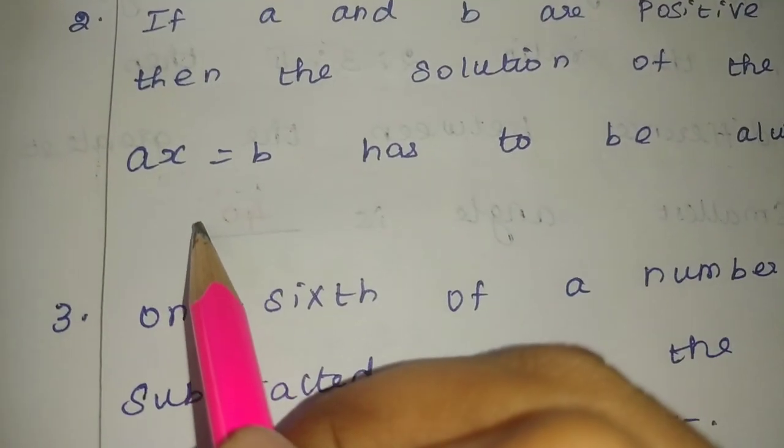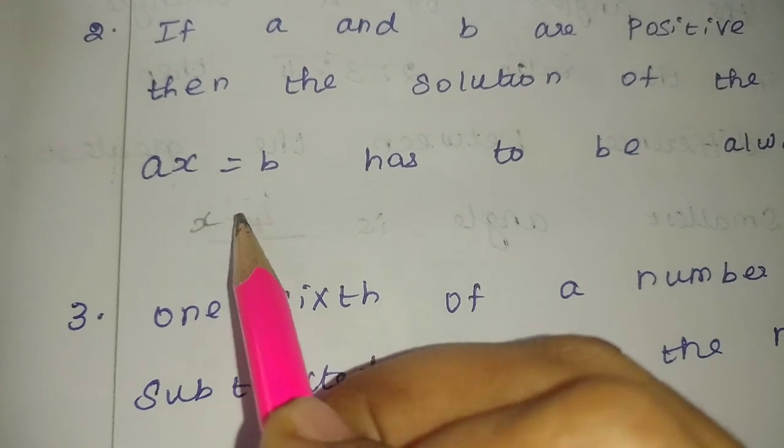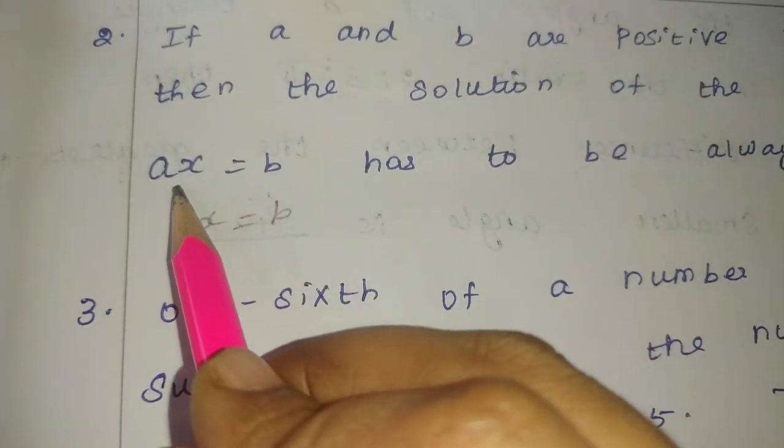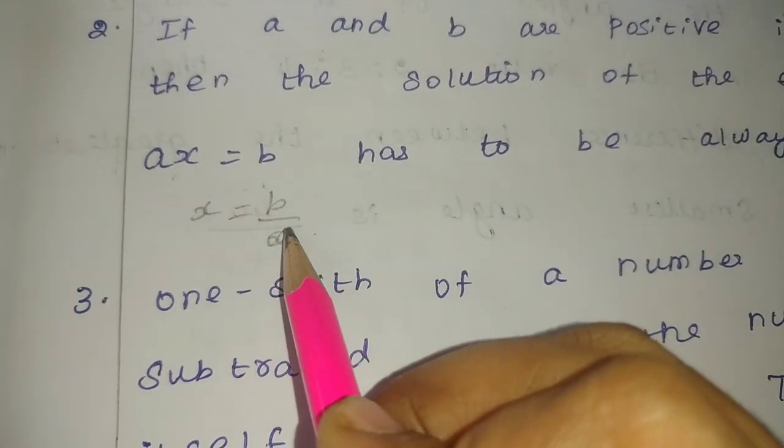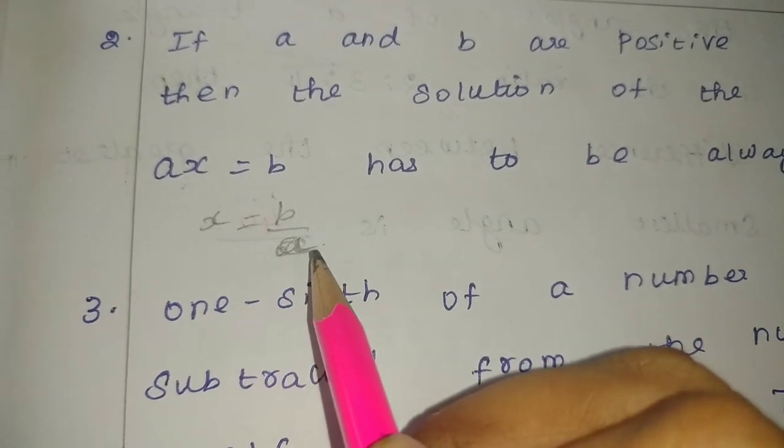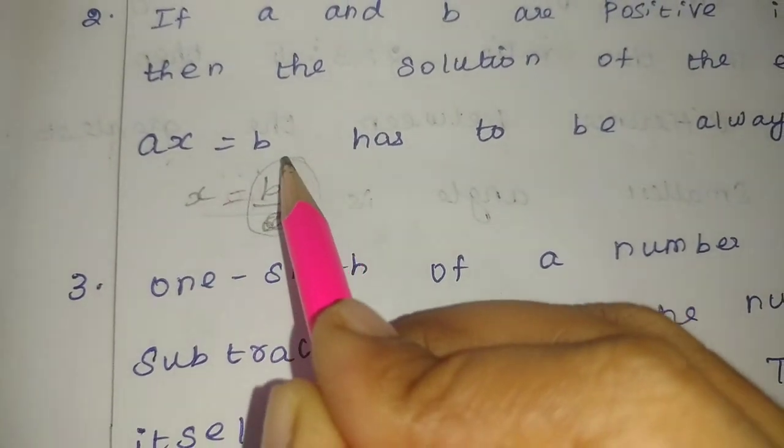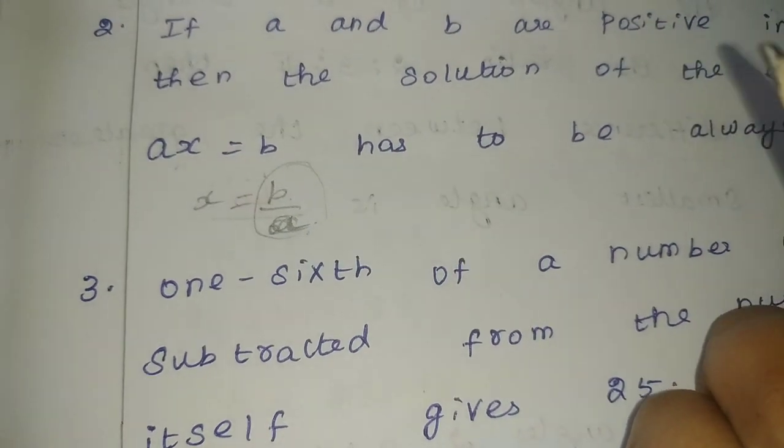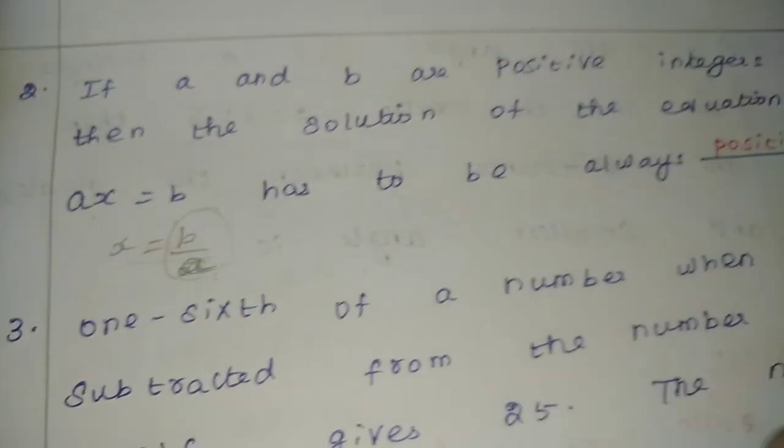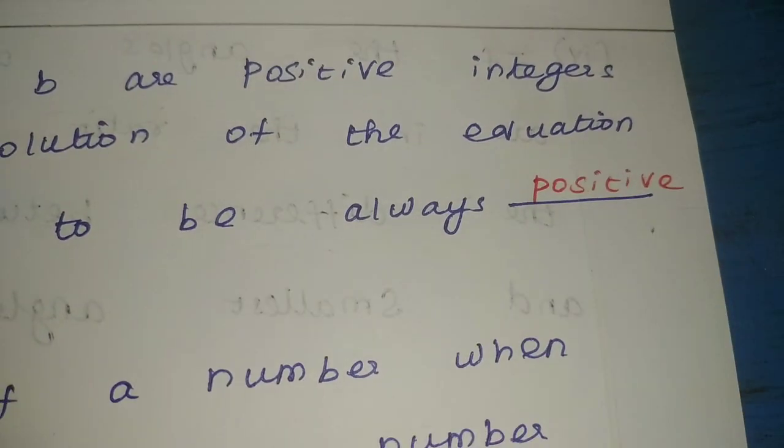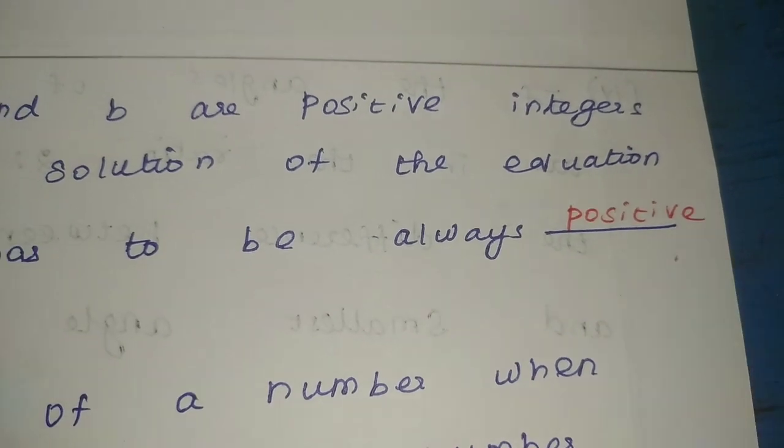So in the equation ax equals b, to find the solution we need to find x. We take b and divide by a. Since b value is positive and a value is positive, the answer is positive.